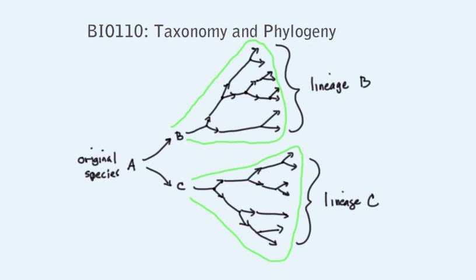The organisms in lineage B should not have these traits. They would not have inherited these traits from C because they do not descend from C. And they would not have inherited them from B because B did not have these traits.